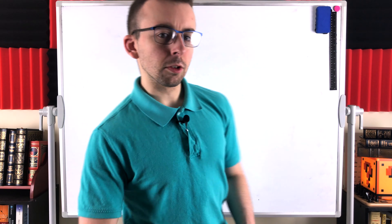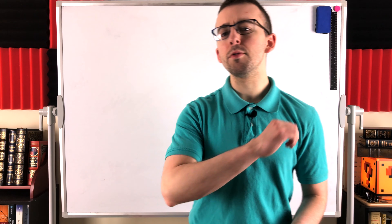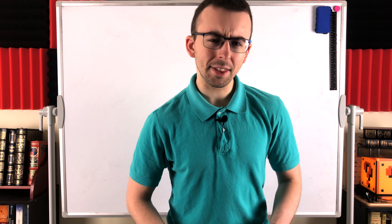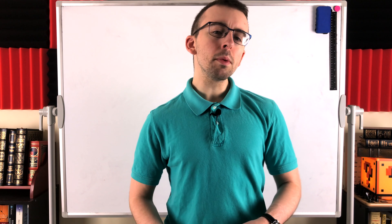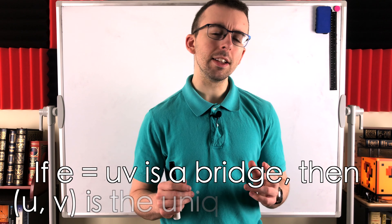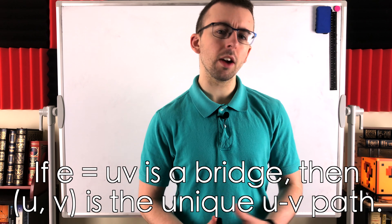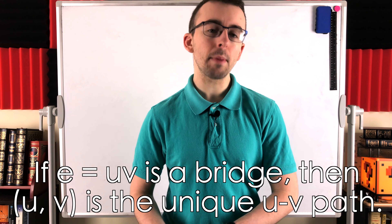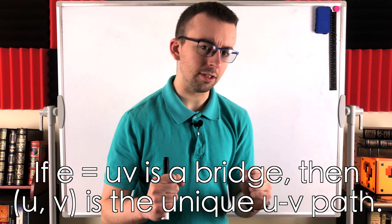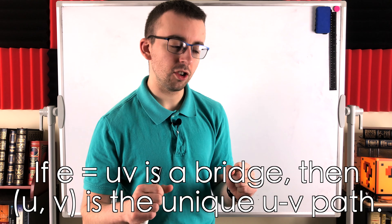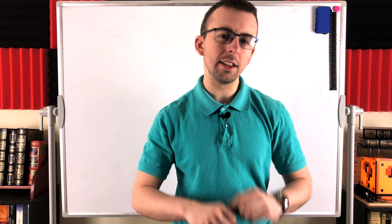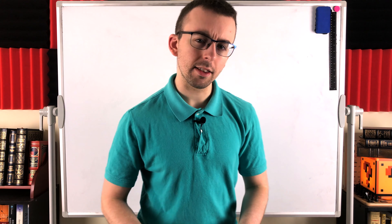Howdy folks, got another little graph theory proof for you in today's Wrath of Math lesson. We'll be proving that if an edge is a bridge of a graph, then there is a unique path connecting the end vertices of the bridge — and in particular, that path is the bridge itself.